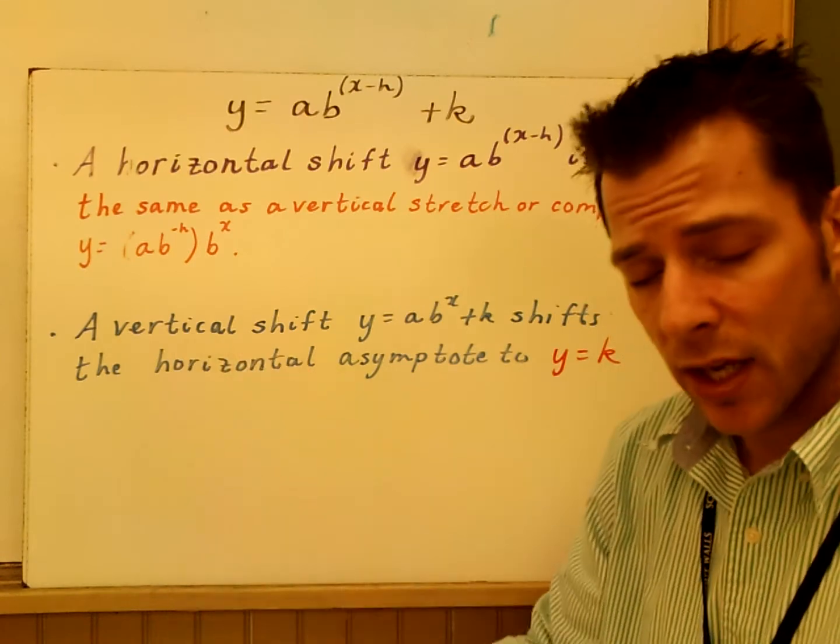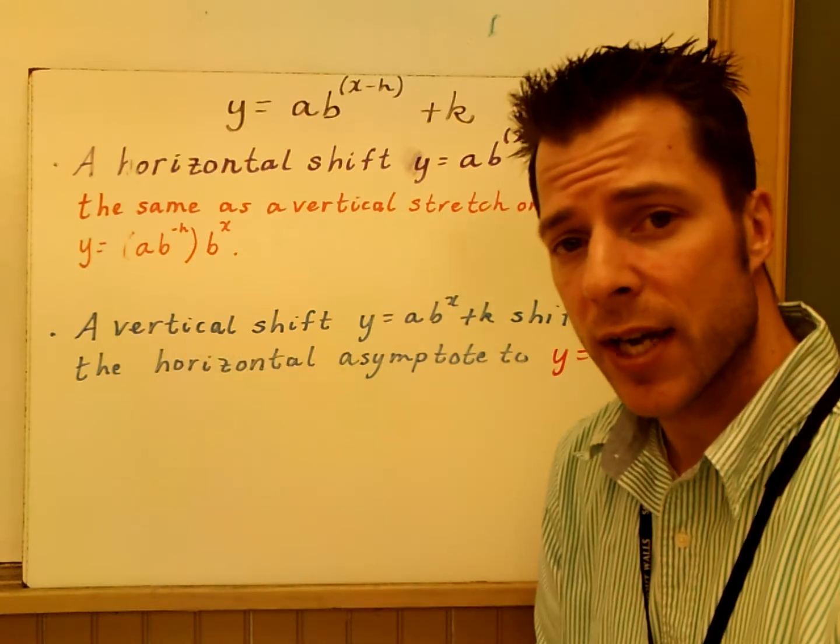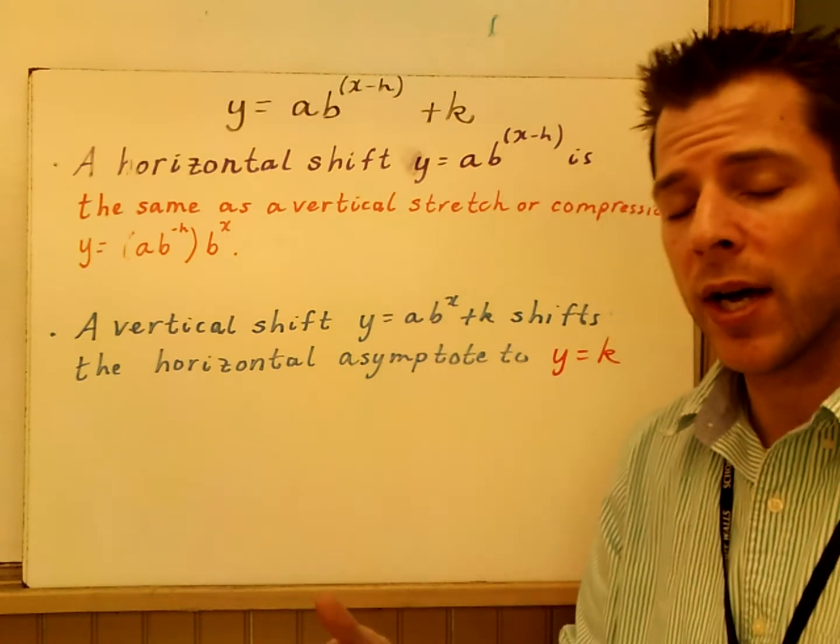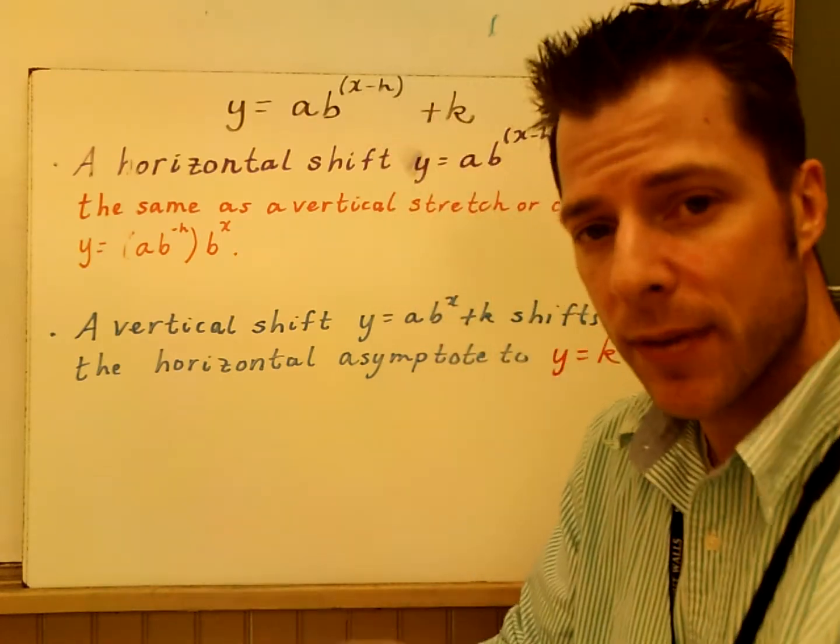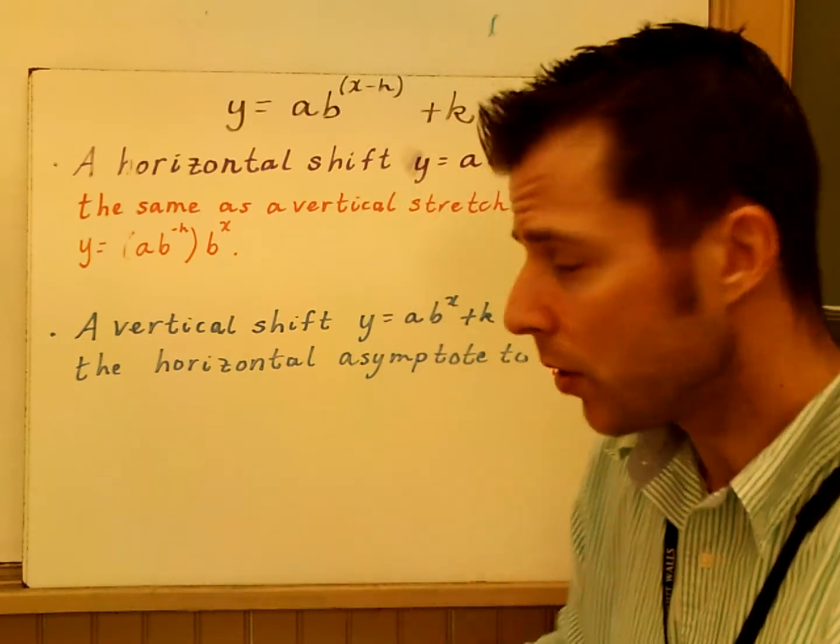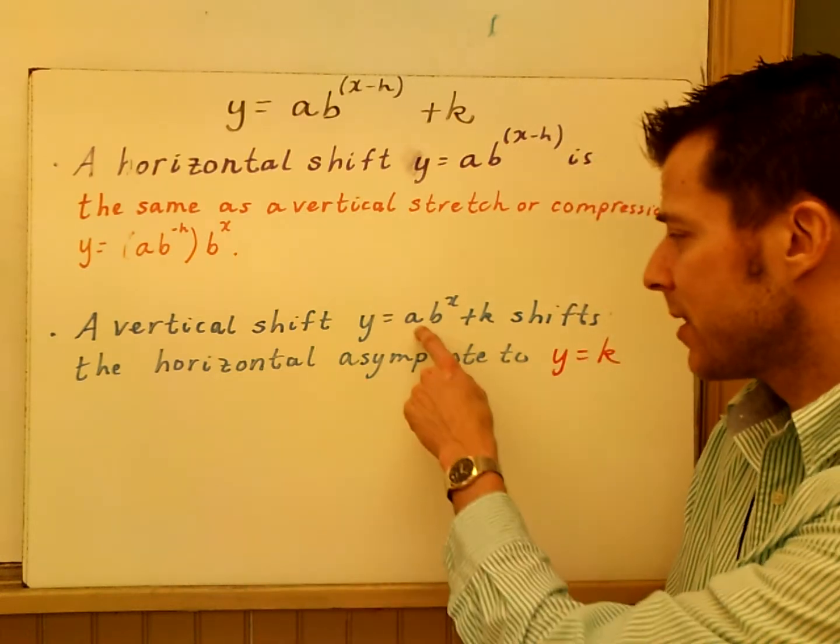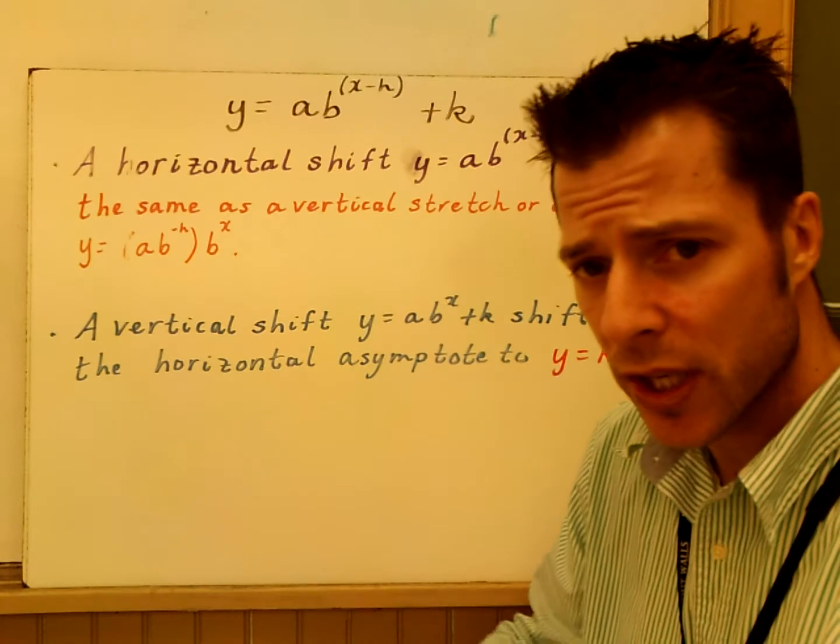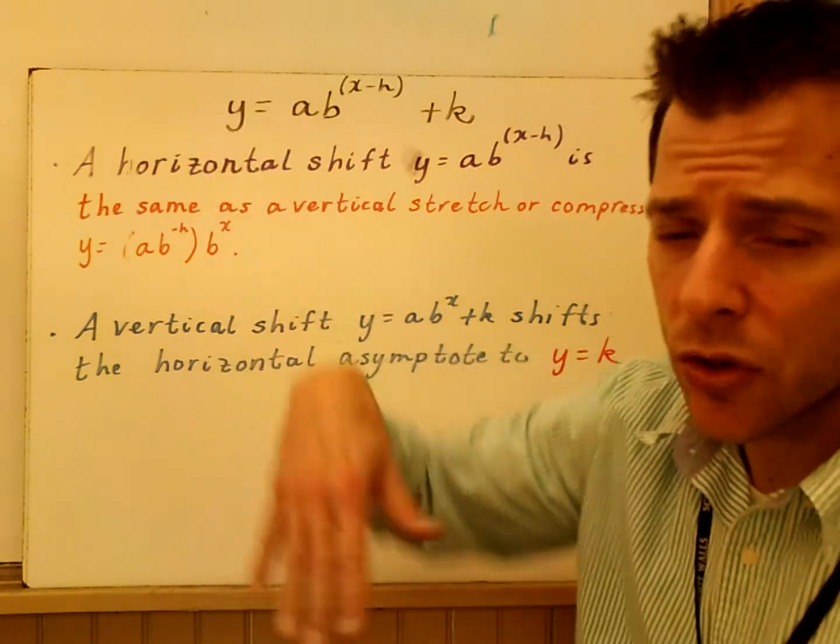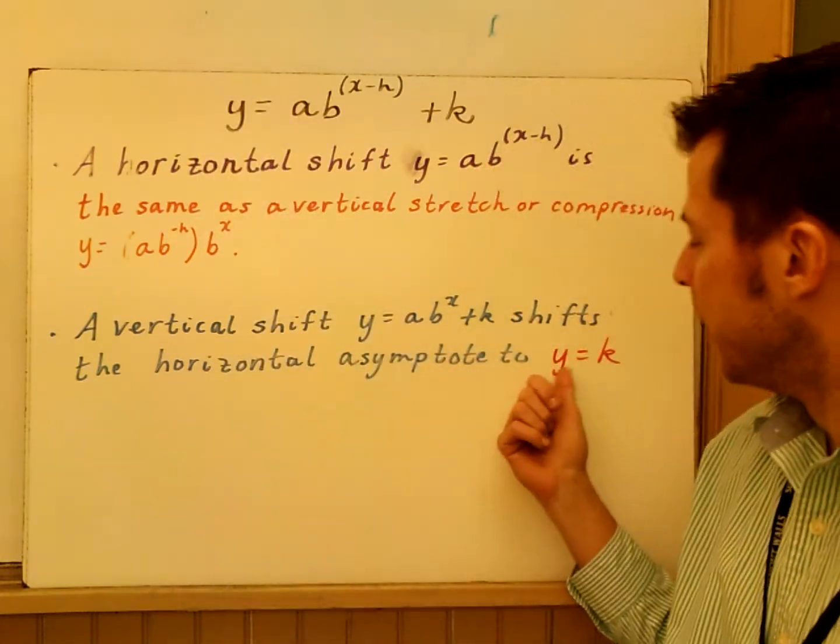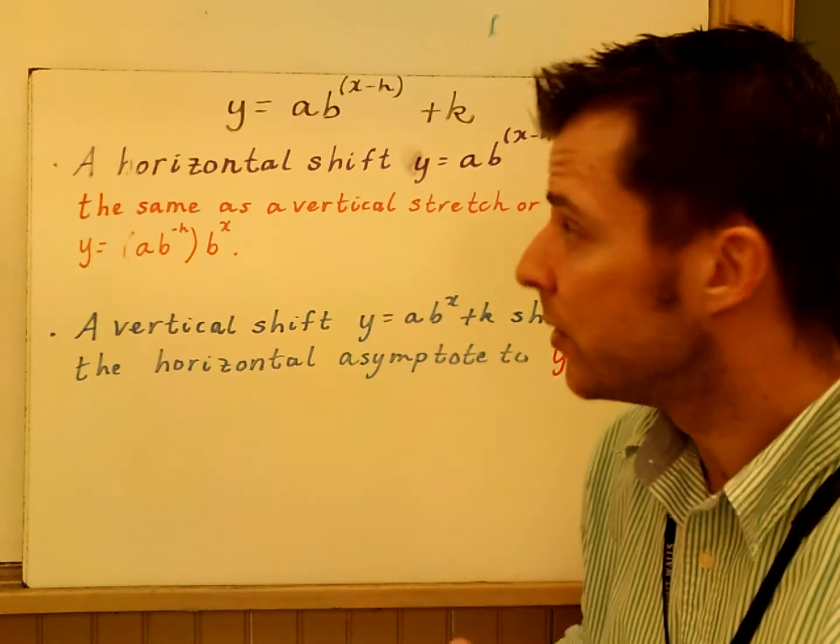A vertical shift, the other thing here is a vertical shift is going to change the horizontal asymptote. It's no longer going to be Y equals, or not the Y intercept, I'm sorry, the horizontal asymptote. So the asymptote is going to be K now, and that's what this second point says. If you have a vertical shift, your horizontal asymptote is going from zero to whatever K is. So K will switch your horizontal asymptote.